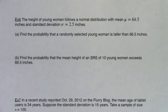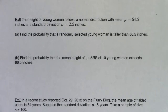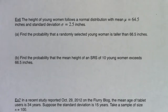All right, let's work some of these problems. Things to keep in mind: when you read this, is the information about the population distribution or the sampling distribution? We really want to start separating which distribution we're talking about. The height of young women follows a normal distribution with a mean of 64.5 inches and a standard deviation of 2.5 inches. Find the probability that a randomly selected woman is taller than 66.5 inches.